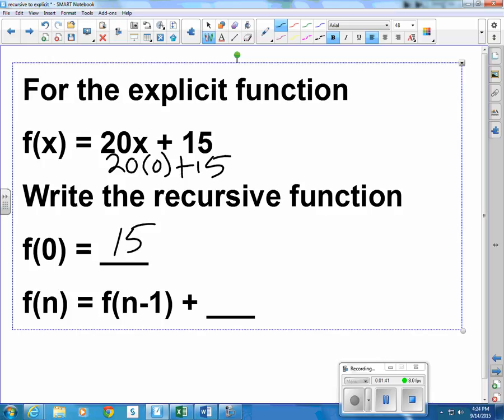And the function at n, you go to the one before it and add how many? Well, this explicit function says we're going to multiply by whatever the value of x is times 20. So each time x increases by 1, the function increases by 20. So I go to the previous value and add 20.